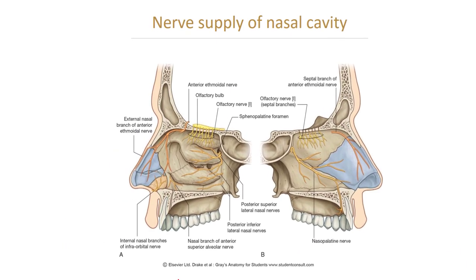This is the nerve supply of the nasal cavity, showing the olfactory bulb and olfactory part of the nasal cavity, with the different nerves including those directed to the maxillary nerve, the nasopalatine nerve, and the anterior ethmoidal nerve.